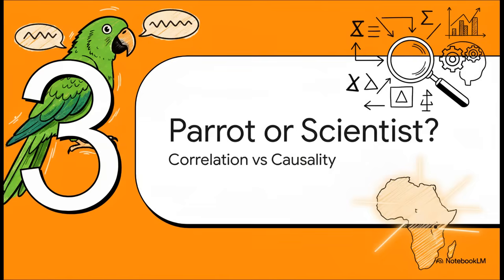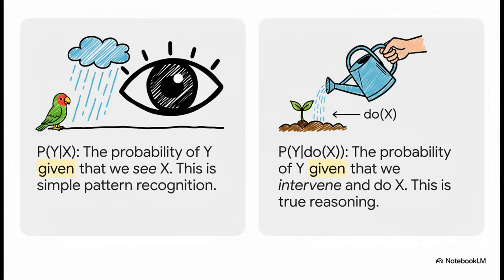Let's talk about a really critical distinction. Most of the AI we have today, they're brilliant mimics. They're like parrots. They can listen to enormous amounts of information and repeat the patterns they find with incredible accuracy. But what we really need are AIs that can think like scientists. Systems that don't just see patterns, but actually understand the cause and effect behind them. The math of causality gives us the exact language for this. There is a world of difference between P of Y when X, which is just the probability of Y happening if you happen to see X, and P of Y if you actually intervene and do something to X. One is just passive observation. The other is active experimentation. That's the leap from parrot to scientist.